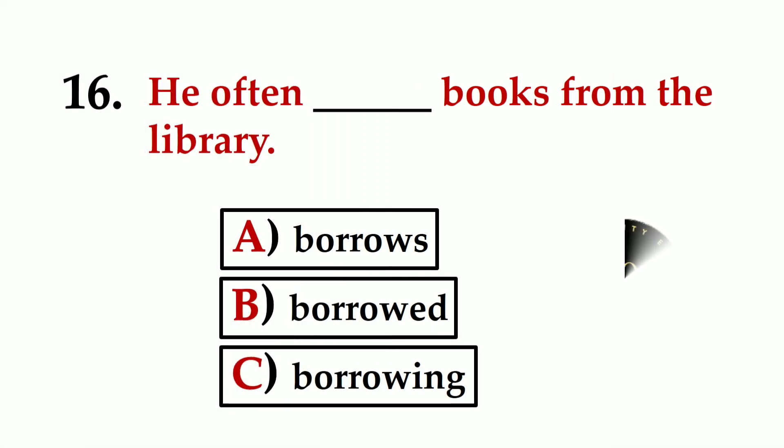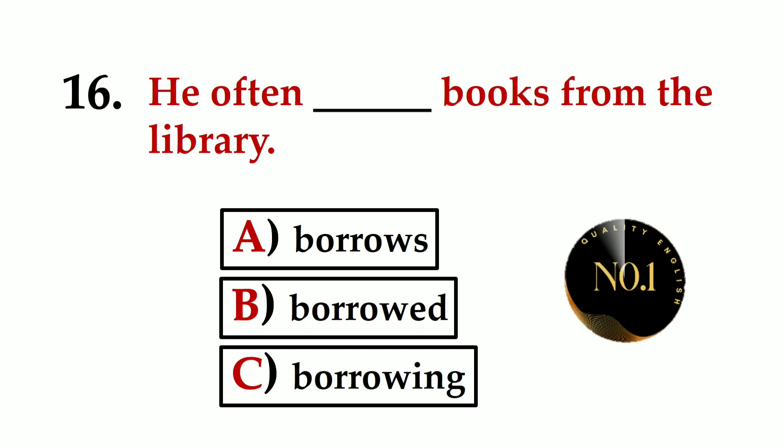Number sixteen: He often ___ books from the library. A) borrows, B) borrowed, C) borrowing. The correct option is A) borrows.